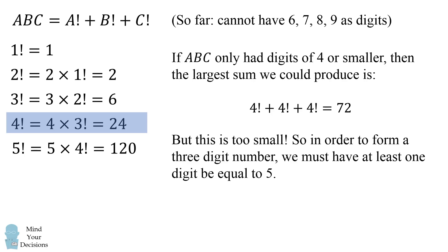We need a three digit number, so in order to form a three digit number we must have at least one digit be equal to five.